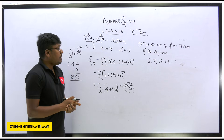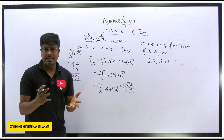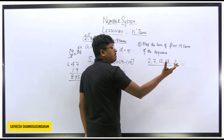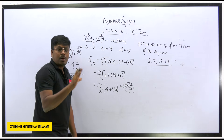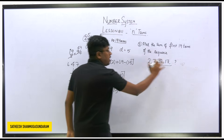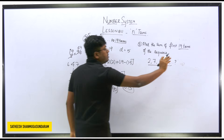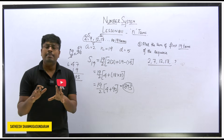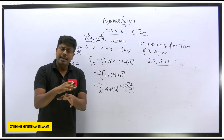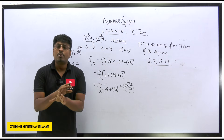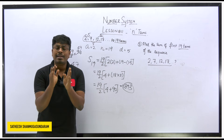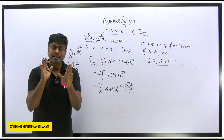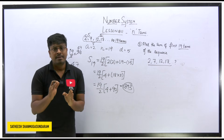Always remember: the question can be asked in different ways, but look at the series carefully. If the last part says 'plus something' — a specific number — then use the formula from Lesson 5. If it says 'up to 19 terms' or '100 terms', use the Arithmetic Progression formula. In AP there are many concepts and formulas, but I'm only teaching the ones relevant to the exam point of view. This is one of the most important formulas for competitive exams.